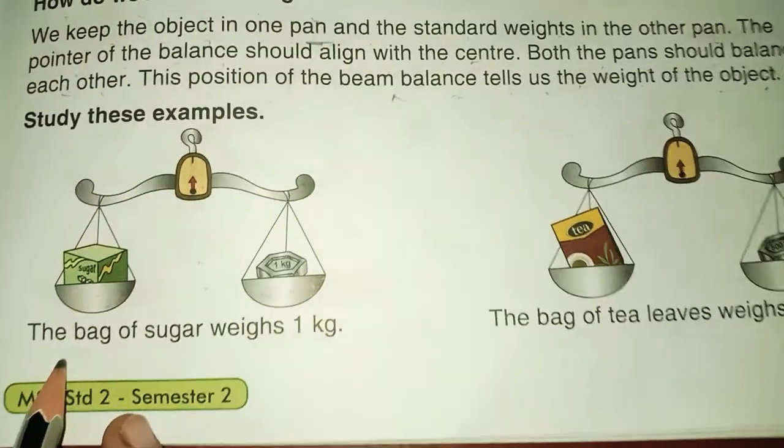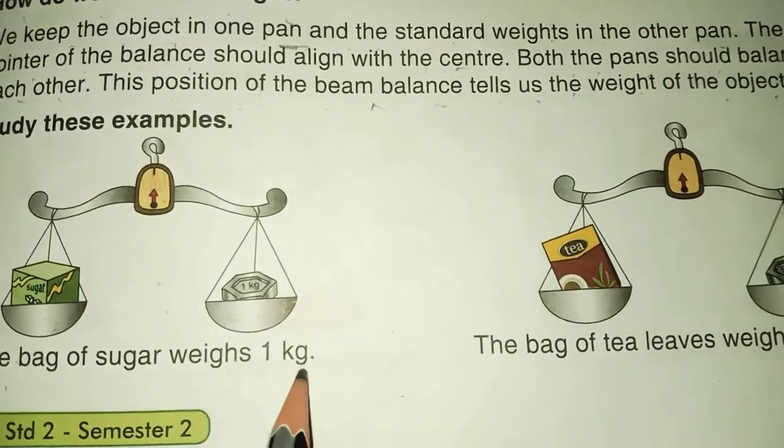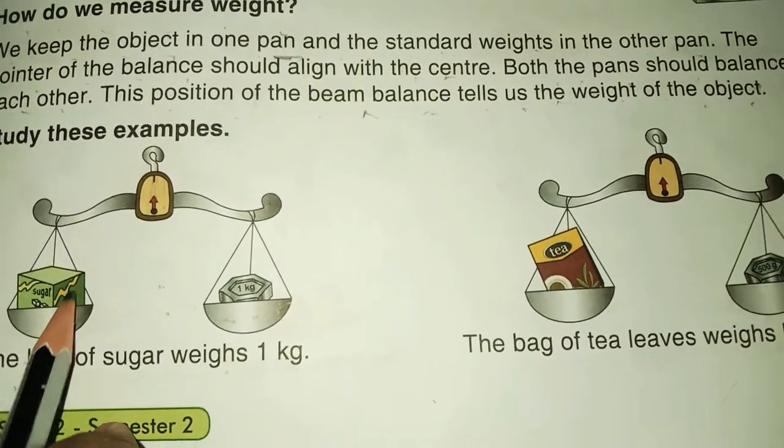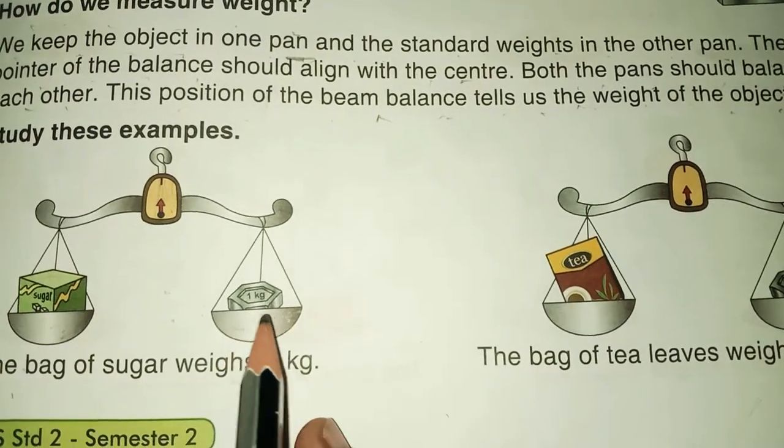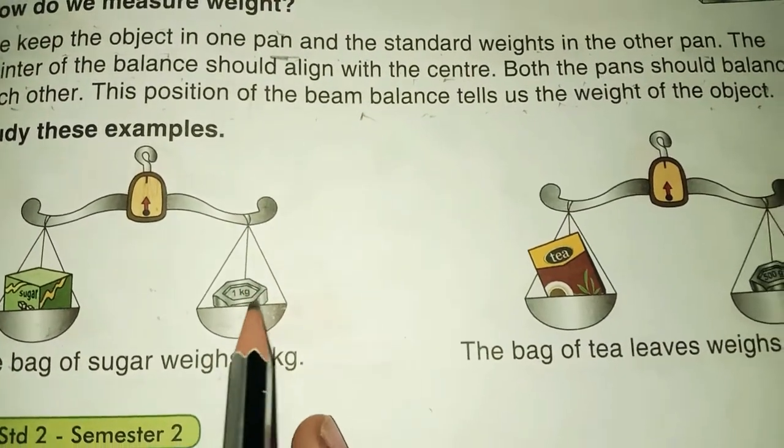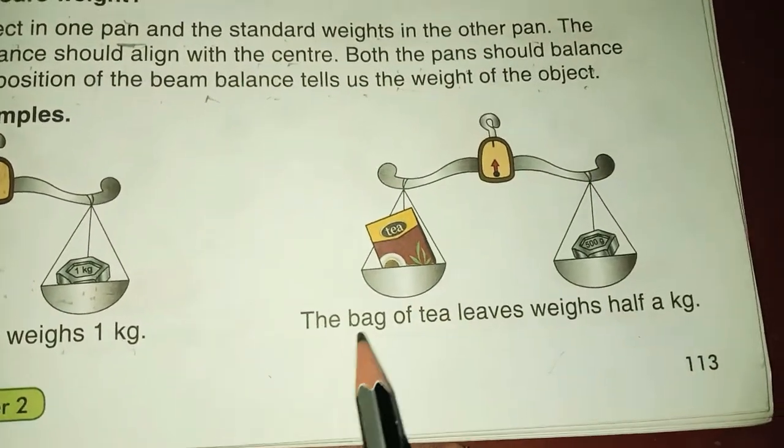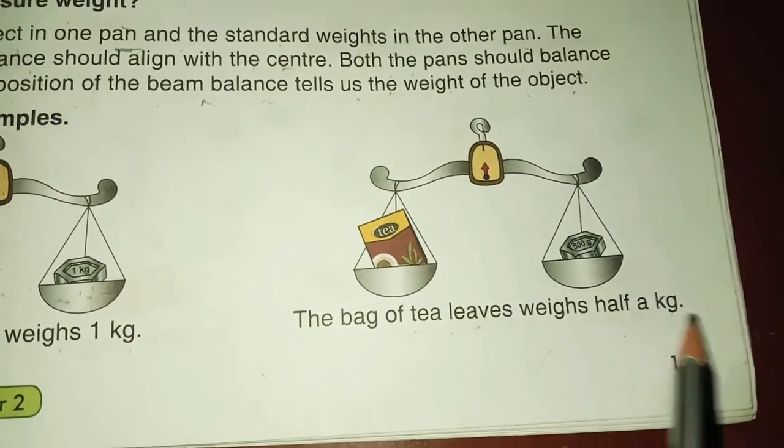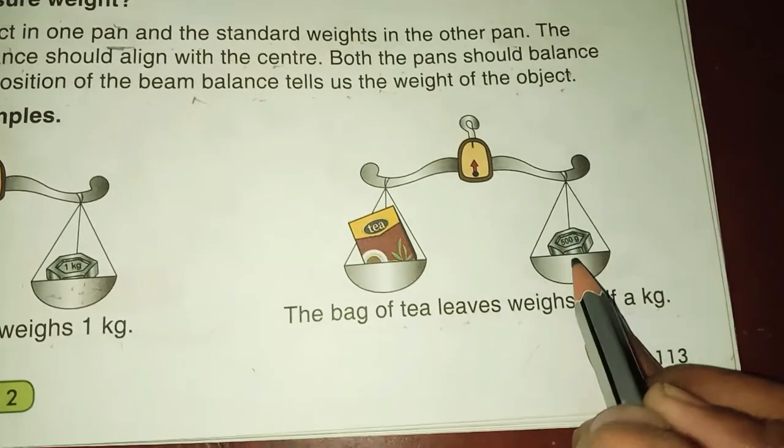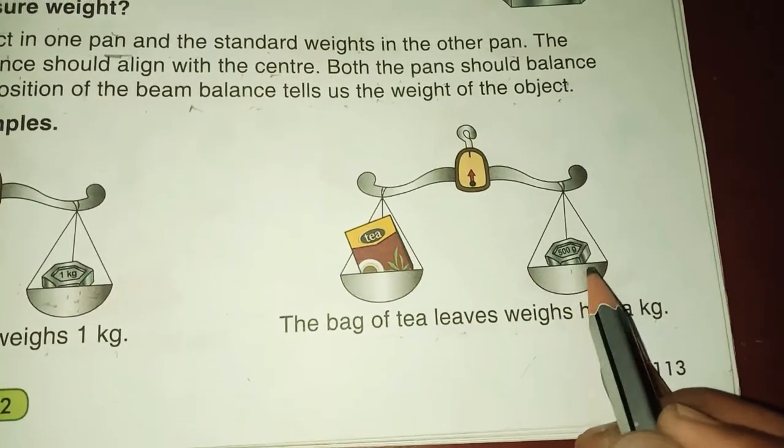See here, the bag of sugar weighs 1 kg. We put the 1 kg sugar here and we put the 1 kg standard weight here. And here, this is also the bag of tea leaves weighs half a kg. If we put half kg means 500 gram.